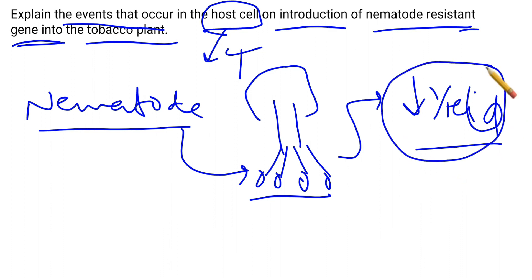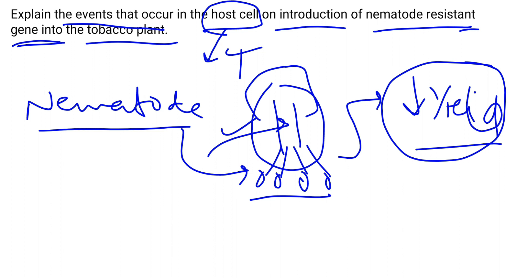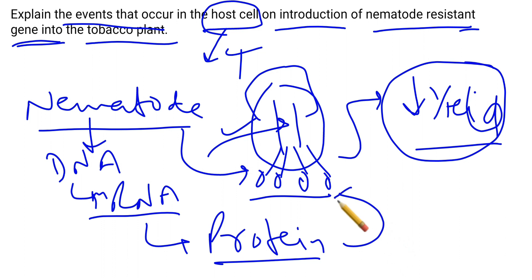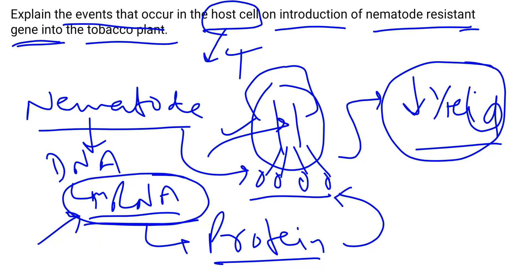We have to prevent this decrease in yield, so we are going to introduce nematode resistant genes into this plant. The nematode has its own DNA, which forms mRNA, and from mRNA it forms the infectious protein responsible for node formation. We have to interfere with this process — specifically stop this mRNA from forming protein — using the mechanism known as RNA interference.